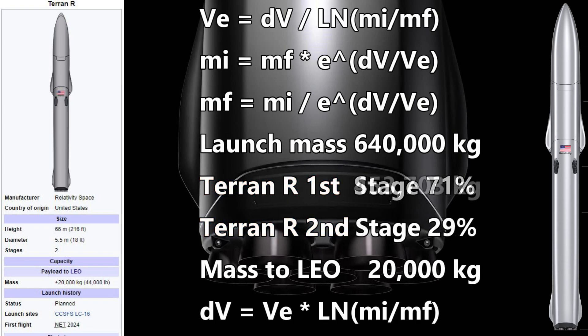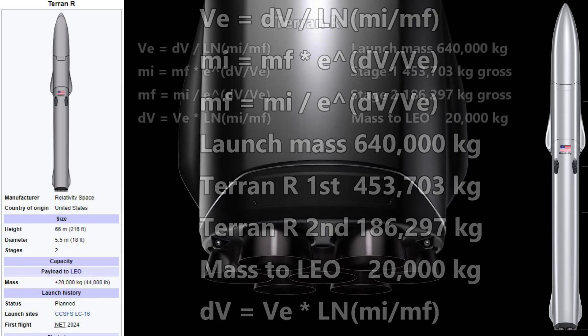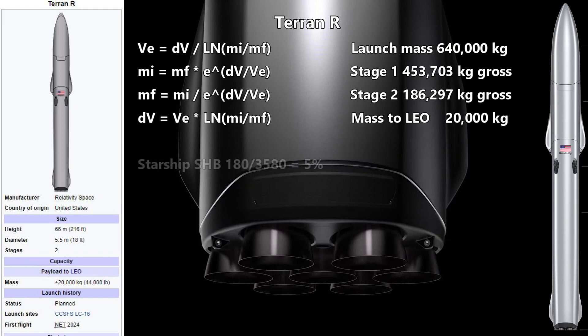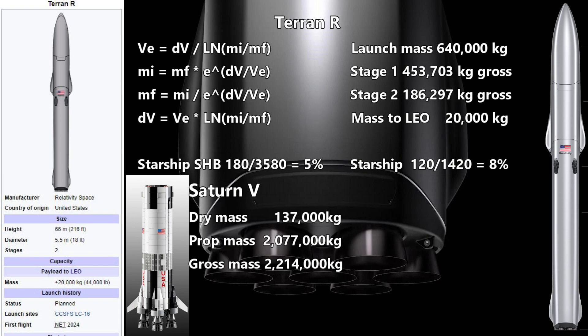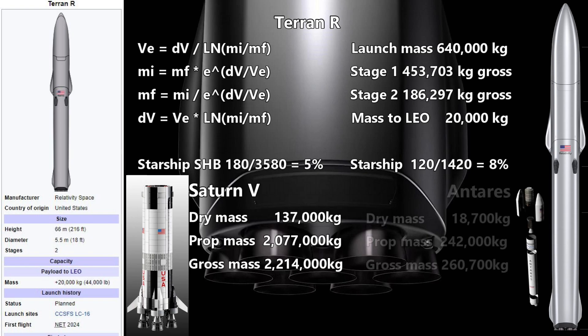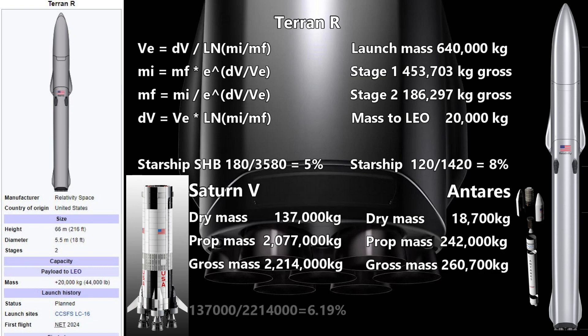That would give the Terran R a first stage mass of almost 454 metric tons, and a second stage mass of a little more than 186 metric tons. Now let's get an estimate of dry mass. The dry mass of the Starship booster compared to its wet mass is 5%. The dry mass of the Starship second stage with payload compared to its wet mass is about 8%. We will use these in our estimates, but understand that as rockets get bigger, the dry mass as a fraction of the wet mass usually drops just a little. Here are the dry mass, propellant mass, and wet mass of the Saturn V RP-1 and liquid oxygen first stage, and the same numbers for the RP-1 fueled Antares rocket. The dry mass percentage of the Saturn V first stage is about 1% lighter than that of the Antares.